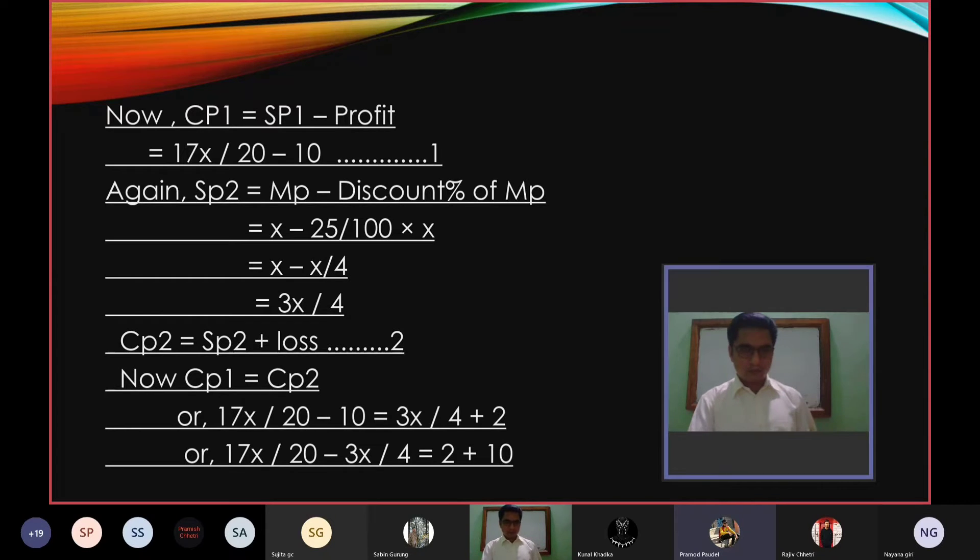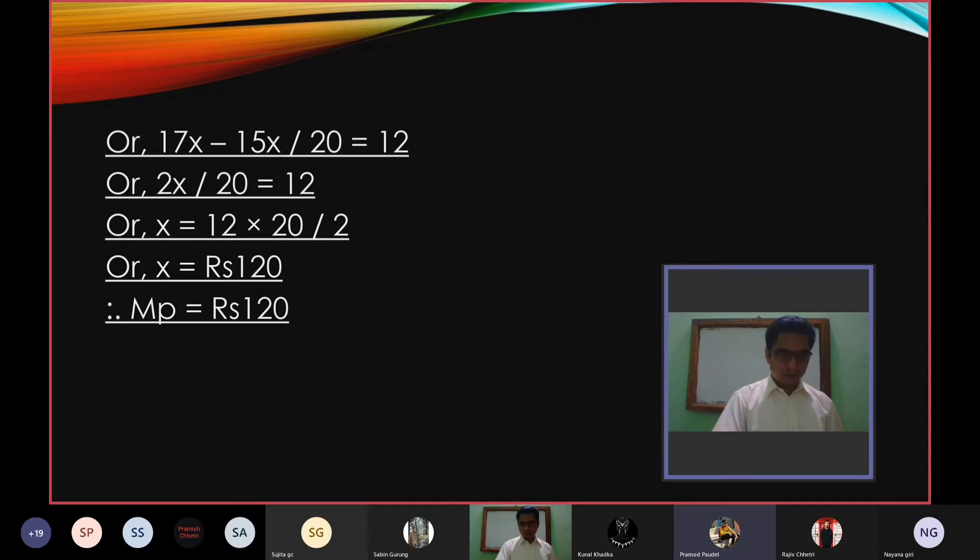CP equals SP2 plus loss, equals 3x/4 plus 2. Or 17x/20 minus 10 equals 3x/4 plus 2. Or 17x minus 15x over 20 equals 12. Or 2x/20 equals 12. Or x equals 12 times 20/2. Or x equals Rs 120. Therefore MP equals Rs 120.